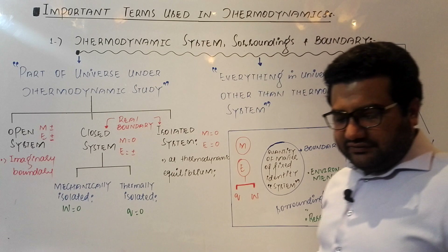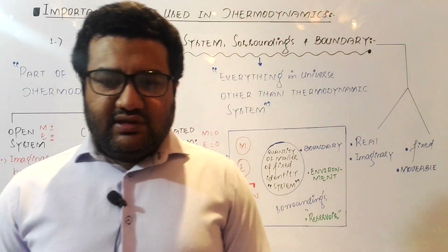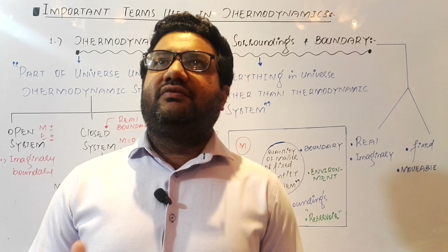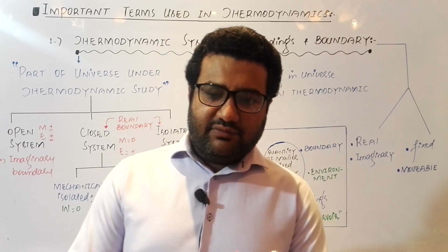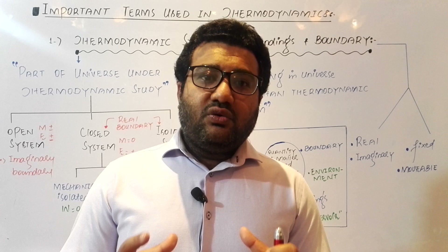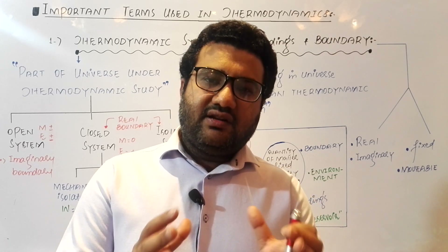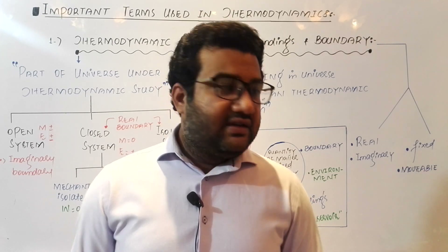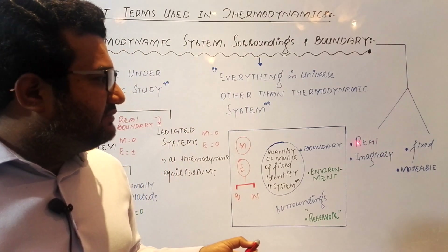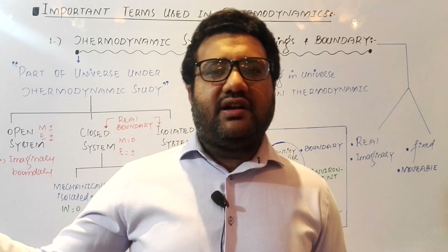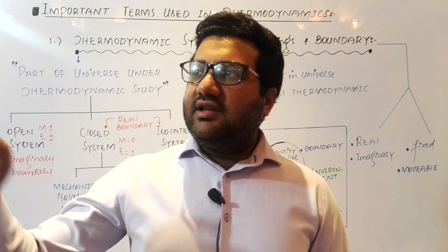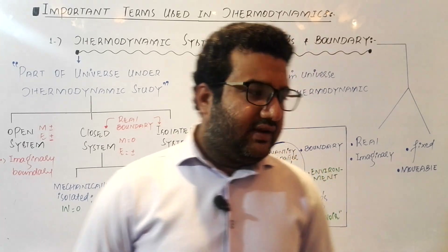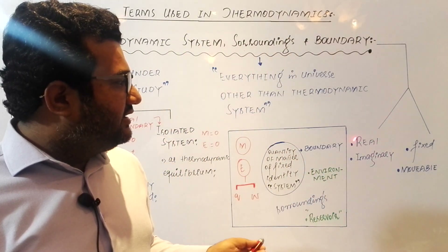Let me give some examples of boundaries and systems. Suppose I am in a room and I want to measure the temperature of this room with a thermometer. This room is my system under study. The walls and ceiling of this room are the boundaries — these are real boundaries. Anything outside this room, all other rooms and everything else in the universe, that is the surroundings. In this case the boundary is a real boundary.